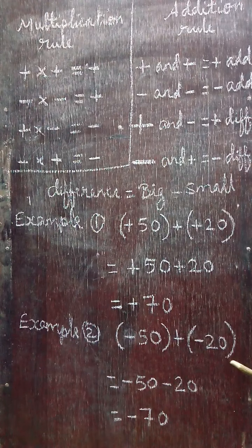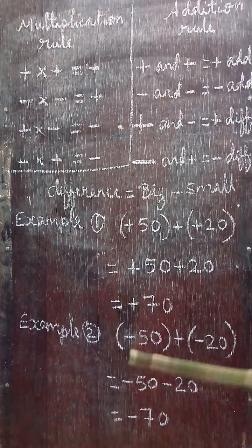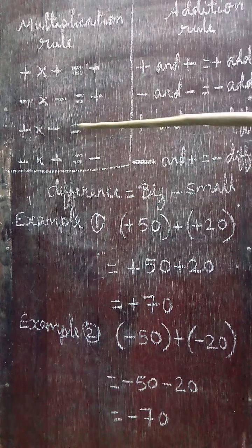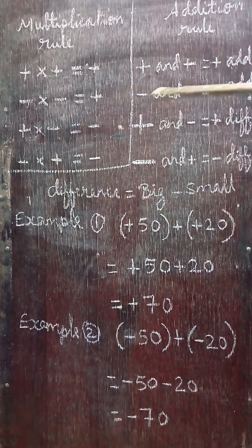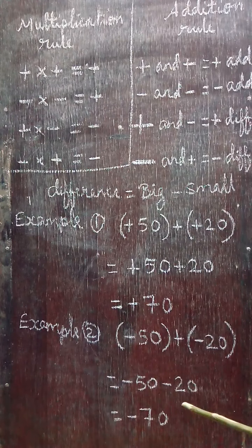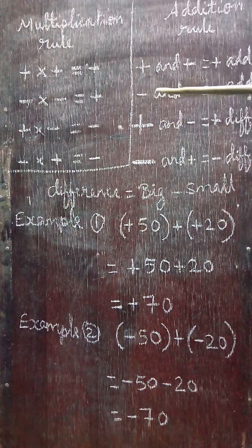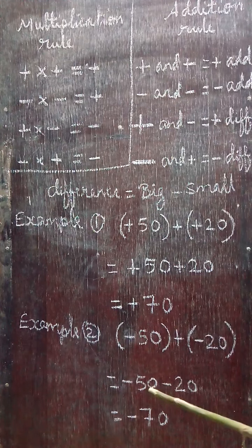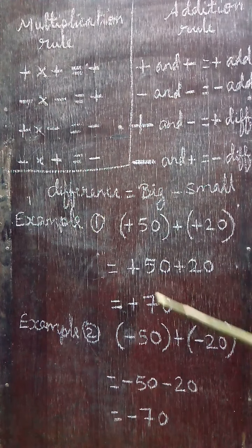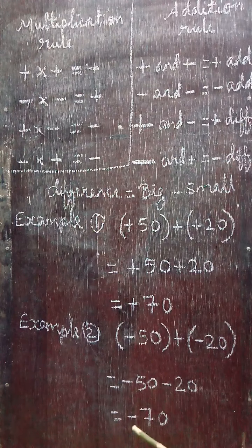Next example: (-50) + (-20). Open the bracket using the multiplication rule. Plus into minus gives minus, so we get -50. Plus into minus gives minus, so we get -20. Now apply the addition rule: minus and minus — put the minus sign and add the values. 50 and 20 added gives 70. So the answer is -70.